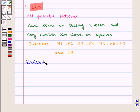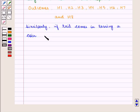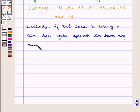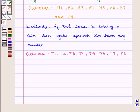Similarly, if tail comes in tossing a coin, then again spinner can have any number. So possible outcomes are T1, T2, T3, T4, T5, T6, T7 and T8.